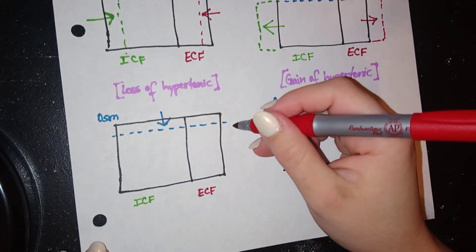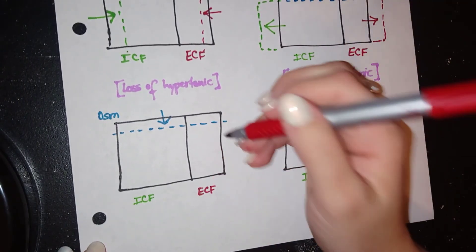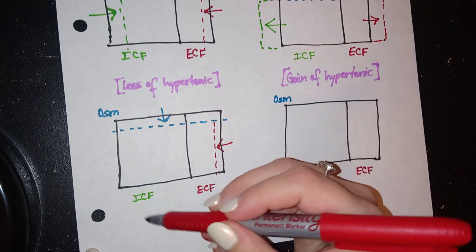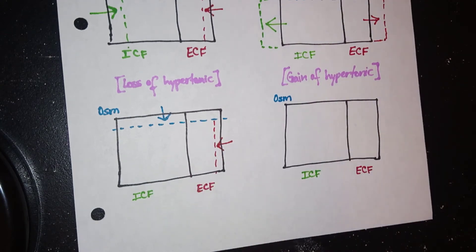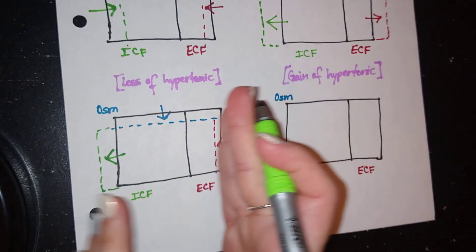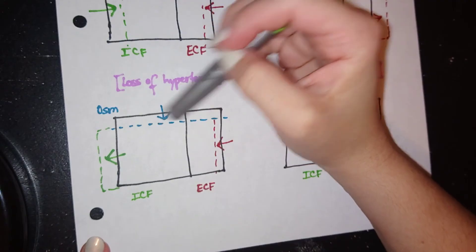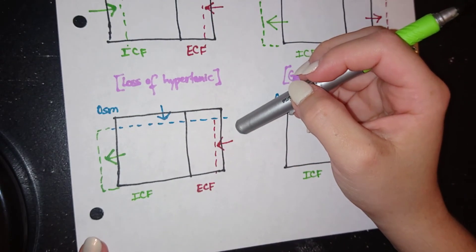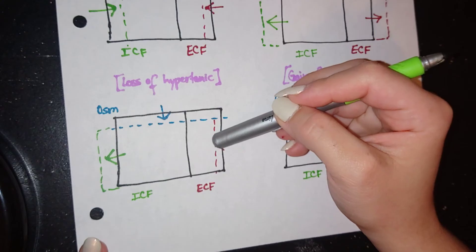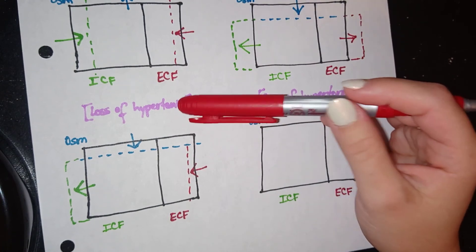Now the ECF wants to become, to make this as isotonic as possible. So it's going to actually come down by giving some of this water to the ICF. So the ICF will actually increase. So we're shifting the volume from the ECF to ICF. Why? We lost salt. There's so little salt, so much water. The ECF wants to make this as isotonic as possible. So it's going to give away some of that excess water to the ICF compartment. Now this would be the case in adrenal insufficiency.